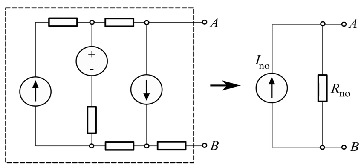This equivalent current ENO is the current obtained at terminals AB of the network with terminals AB short-circuited. This equivalent resistance RNO is the resistance obtained at terminals AB of the network with all its voltage sources short-circuited and all its current sources open-circuited.